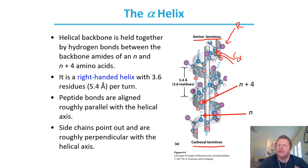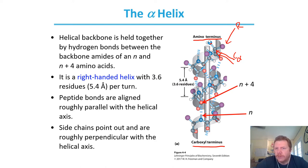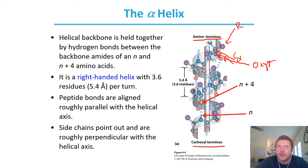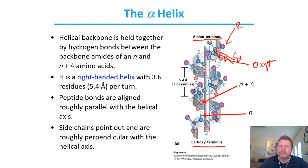This is important to give yourself some orientation about what groups are involved. The one I breezed over was this red ball, this red sphere — that is going to be an oxygen, specifically the carbonyl double-bonded oxygen. So all of these atoms are put together to make this larger but local structure, this alpha helix.